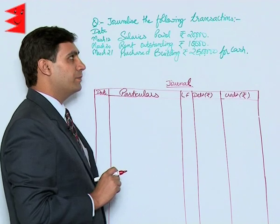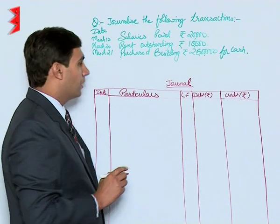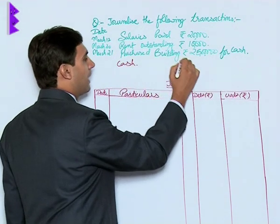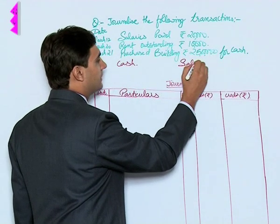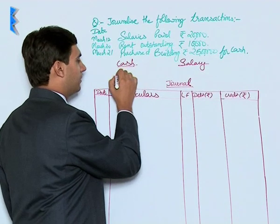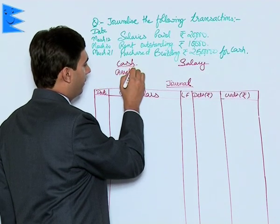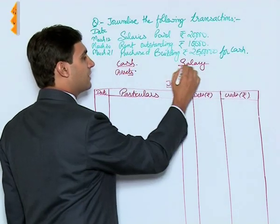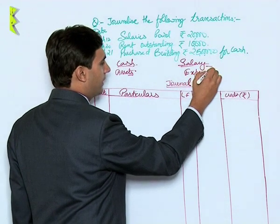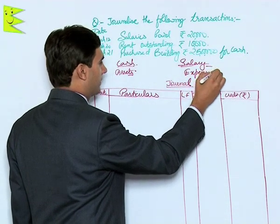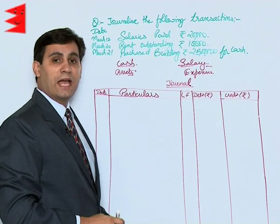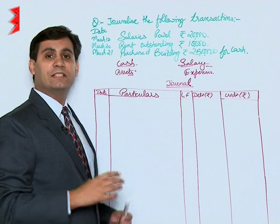The entry on March 12 says salaries paid rupees 20,000. There are two accounts involved here: cash and salary. Cash is an asset, so it falls under the category of assets. Salary is an expense, so it is classified under expenses.